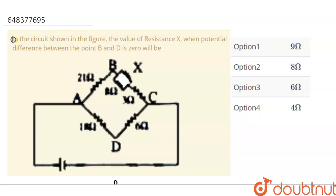Hello students, question is, in the circuit shown in the figure, this one, the value of resistance X, that is this resistor, when potential difference between the point B and D is 0, will be. So let's solve this.